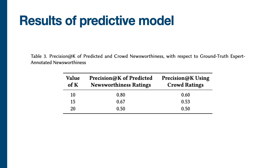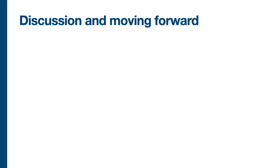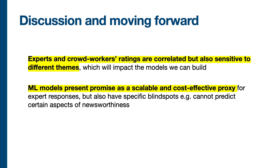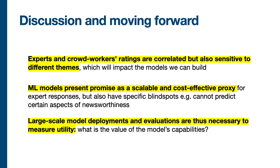Based on the results of the predictive model and research question one, we present a set of takeaways and points for future discussion. The first main point is that expert and crowd worker ratings are visibly correlated, but also sensitive to different themes, which will impact the models we can build. The machine learning models do present promise as a scalable and cost-effective proxy for expert responses, but they also have specific blind spots. For instance, they cannot predict aspects of newsworthiness related to story actualization or story reception, simply because crowd workers lack the domain expertise to evaluate articles for those criteria. Therefore, we need large-scale model deployments and evaluations to measure the true utility of these models.